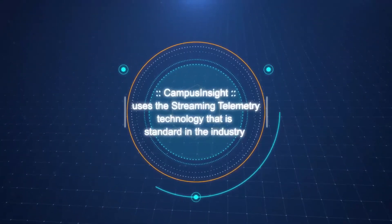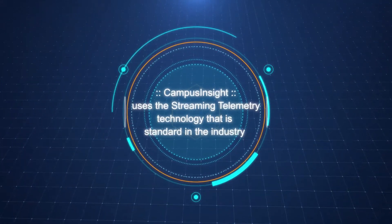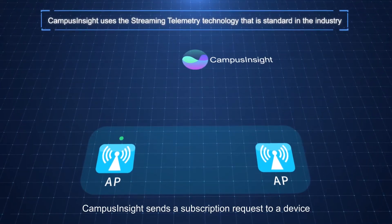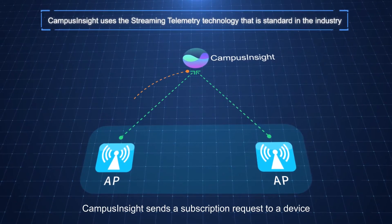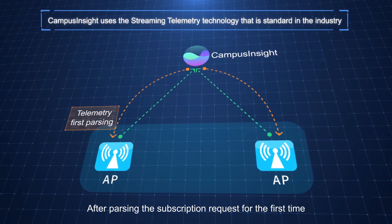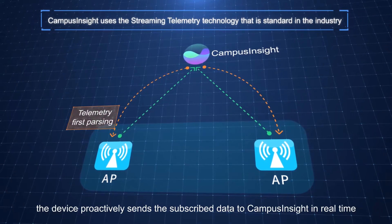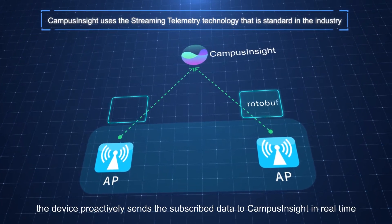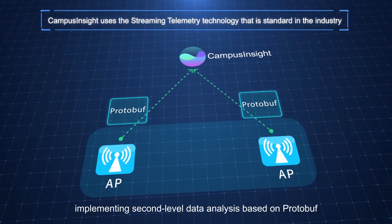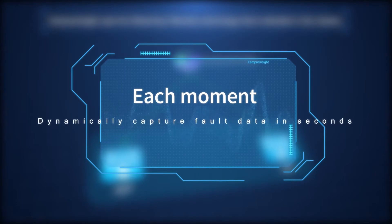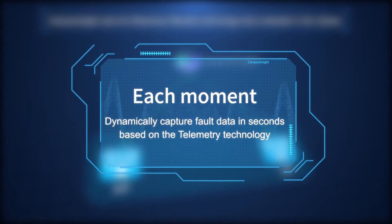Campus Insight uses the streaming telemetry technology that is standard in the industry. Campus Insight sends a subscription request to a device. After parsing the subscription request for the first time, the device proactively sends the subscribed data to Campus Insight in real-time, implementing second-level data analysis based on protobuf. This dynamically captures fault data in seconds based on the telemetry technology.